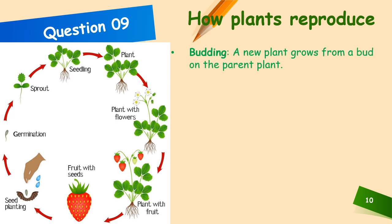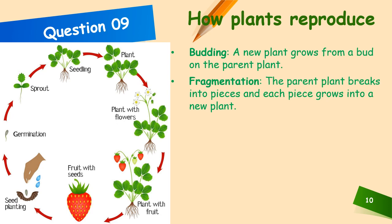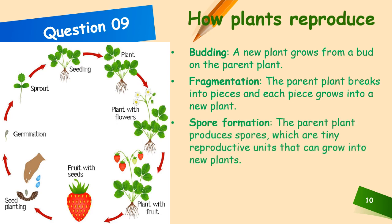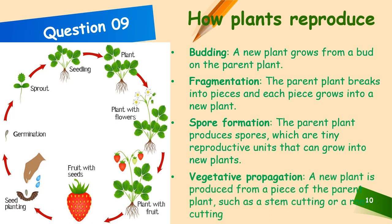Budding: a new plant grows from a bud on the parent plant. Fragmentation: the parent plant breaks into pieces and each piece grows into a new plant. Spore formation: the parent plant produces spores, which are tiny reproductive units that can grow into new plants. Vegetative propagation: a new plant is produced from a piece of the parent plant, such as a stem cutting or a root cutting.